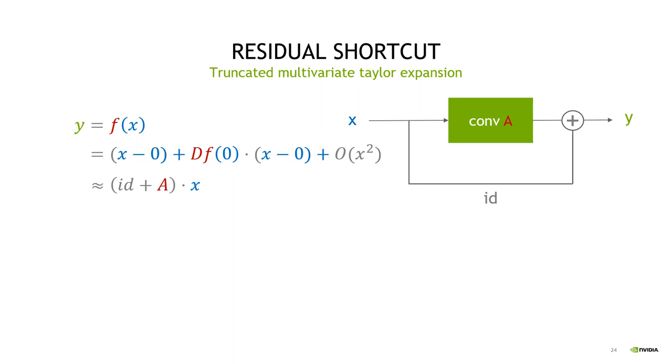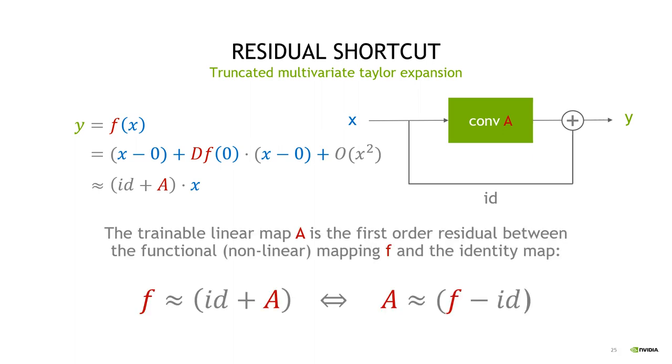And we can further write this as identity plus A applied to x. But that means on the right side that we could just convolve the input x with the kernel matrix A, but also bypass x and then finally add the partial results and get our final result y. The name residual network can be explained as follows. Obviously, we can approximate the function f by the identity plus A. But if we rearrange this expression, we get A is f minus the identity. Therefore, the linear map A just approximates here the deviation of f from the identity, the residuum so to speak.